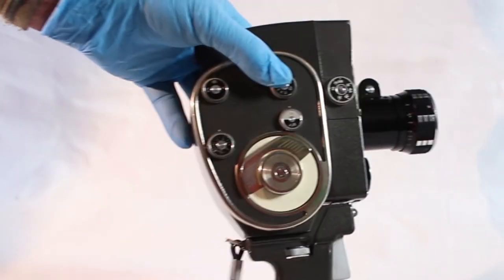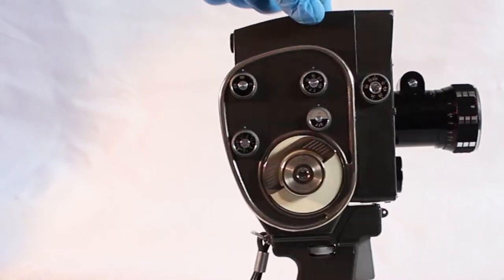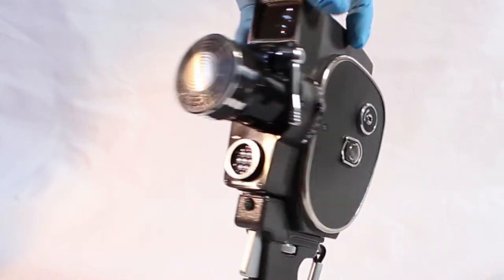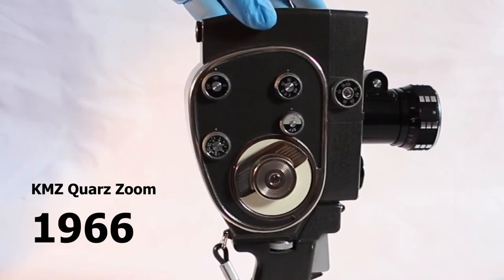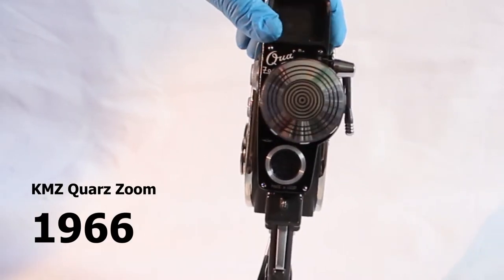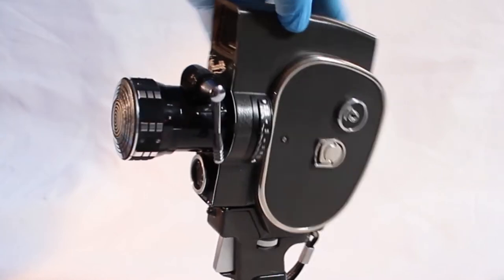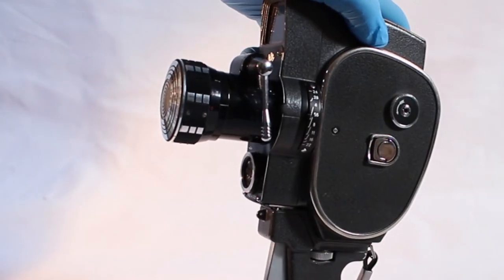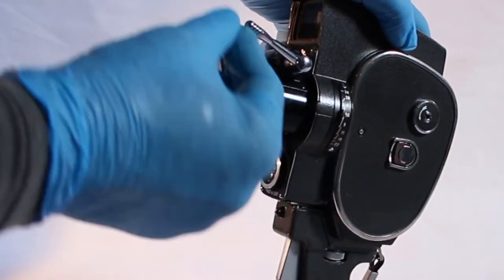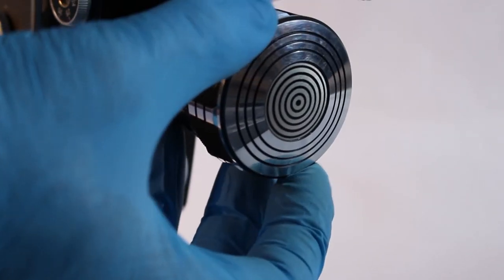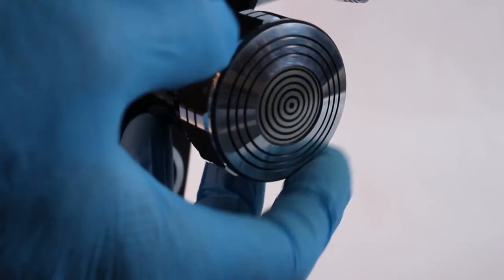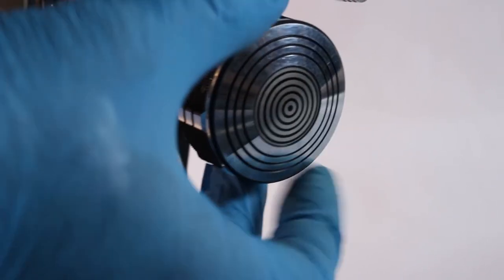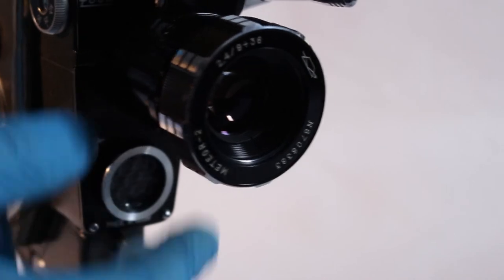And finally we have this, nothing short of absolutely magnificent. Soviet made Quartz Zoom double 8 camera. It is apparently the first ever Soviet made standard 8 camera to have a zoom lens. They certainly don't make lens caps like this anymore. Look at that, it looks like if you look into it while it goes round you could get hypnotized.